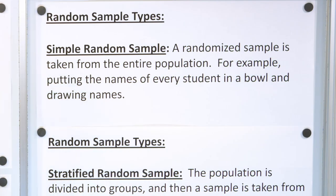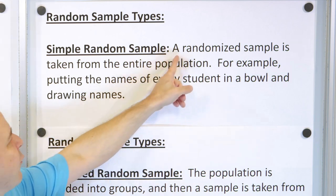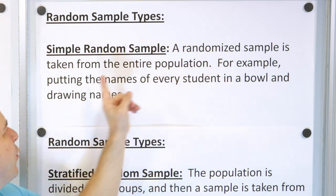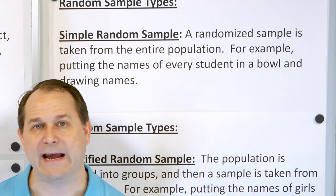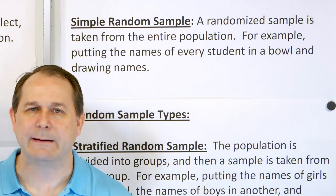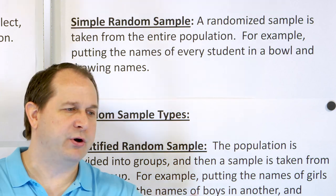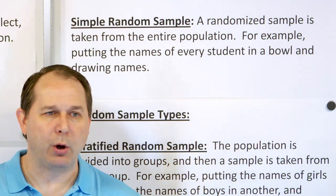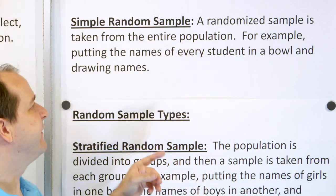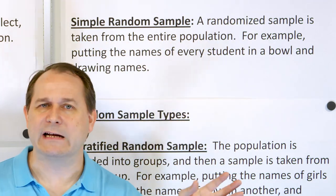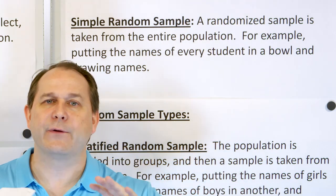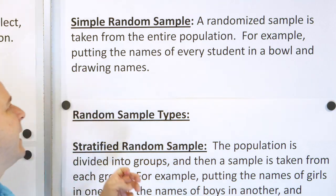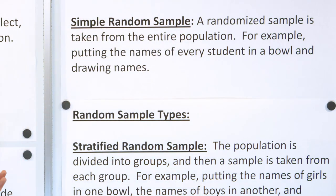We have something called a simple random sample. This is the one we usually think of — a randomized sample taken from the entire population. For example, we put the names of every student in a school in a bowl and start drawing names. We put the entire population in a bowl and draw names out. That's the simplest kind of random sampling, and it's often done, though sometimes you can't.